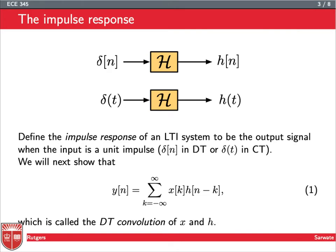So let's define the impulse response of a system — this works for both discrete time and continuous time. The impulse response is just the output of the system when you apply a unit impulse. So you stick delta of n in, and you get something out, and that something we'll call h of n.